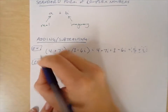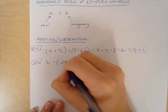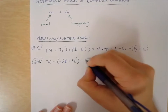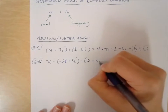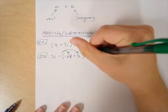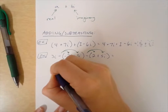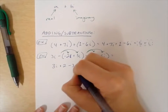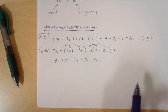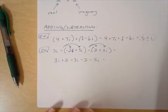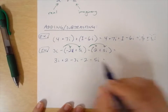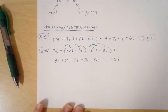Similarly, if we were subtracting, the same rules apply as they would if we were adding or subtracting polynomials or binomials. If we were subtracting binomials, we would have to distribute the negative. We're going to say this is the same as 3i plus 2 minus 3i minus 2 minus 5i. When we combine our like terms, we have 3i minus 3i minus 5i, which gives us negative 5i. And then we have 2 minus 2, which is 0, so we're left with just negative 5i.